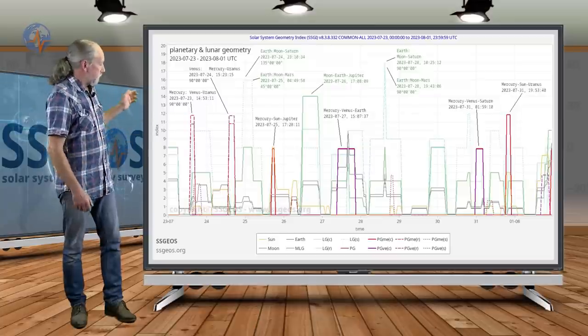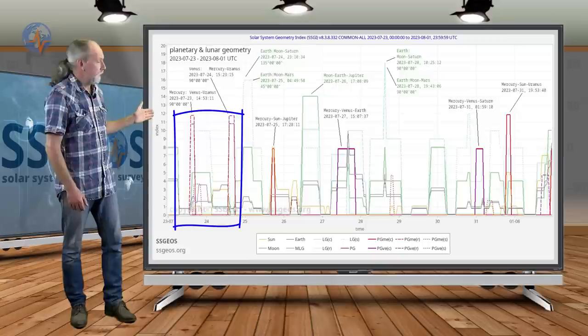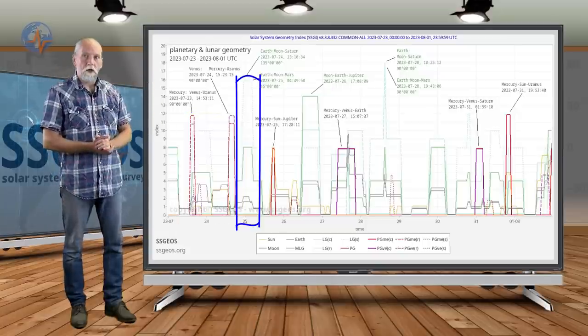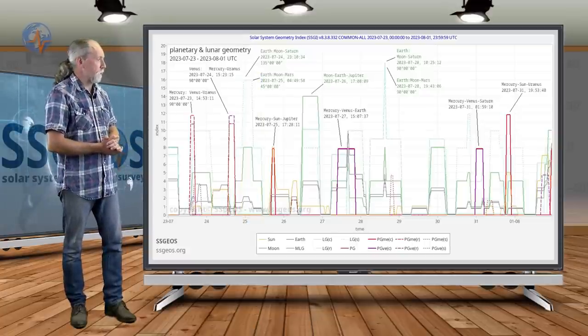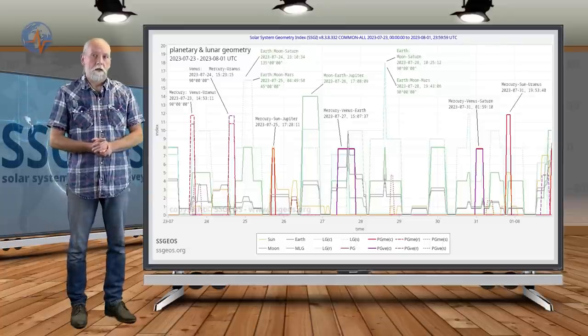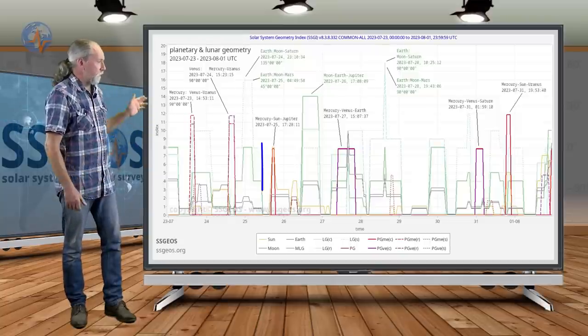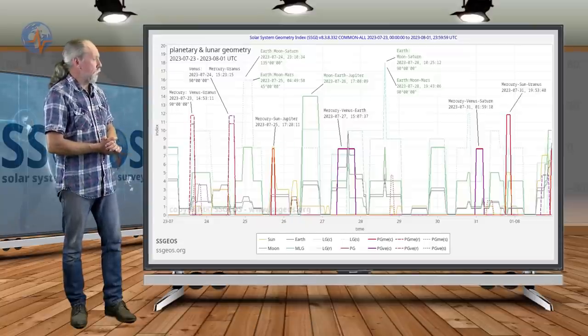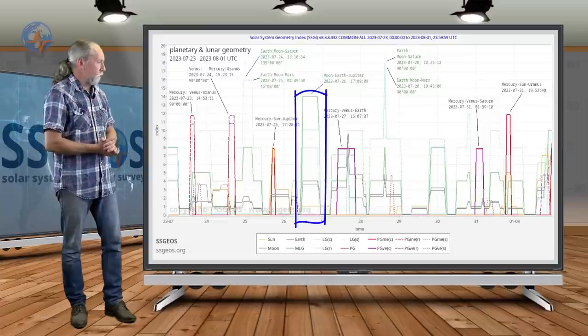Until August 1st, we see here in the beginning the two peaks, Mercury-Venus with Uranus, and that will be followed by a higher lunar peak. That is the lunar geometry with Mars and Saturn, very tight, only a few hours in between. That is a 45 and 135-degree angle geometry with Mars and Saturn. It's followed by planetary conjunction Mercury-Sun-Jupiter, and that will be followed by a lunar conjunction with Jupiter as well on the 26th.